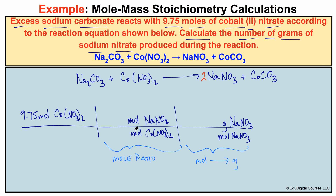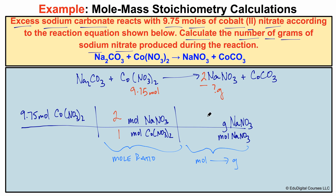Now let's fill in the mole ratio. A mole ratio compares the unknown quantity to the known quantity using the balanced chemical equation. The equation tells us that for every 2 moles of NaNO₃ produced, 1 mole of Co(NO₃)₂ is consumed. So our mole ratio is 2 moles of NaNO₃ per 1 mole of Co(NO₃)₂.